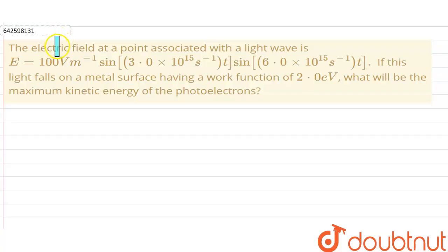Hello everyone, so our question is the electric field at a point associated with the light wave is given as E equals 100 volt per meter sine 3 into 10 raised by 15 per second t into sine 6 into 10 raised by 15 per second into t. If this light falls on the metal surface having the work function of 2 electron volt, what will be the maximum kinetic energy of the photoelectron?